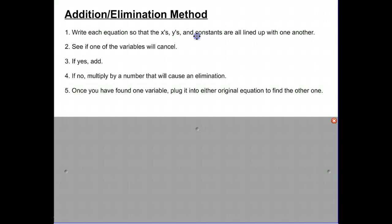Once we line everything up, the second is to see if one of the variables cancel. So if I was to just look at those and add them up, does one of them cancel on their own? If they don't, we need to skip to step number four and multiply by a number that's going to create that elimination. And then finally step five, once I found one of my variables, I plug it in and find the second, which is true of any method that we use.